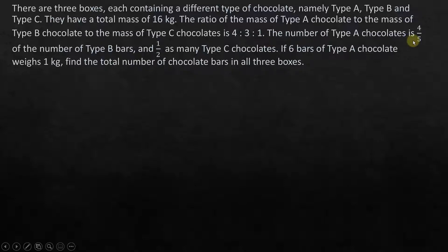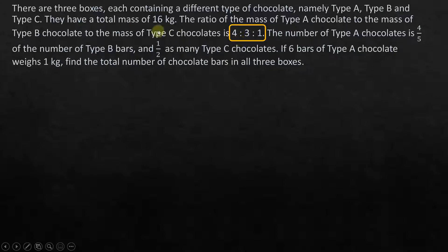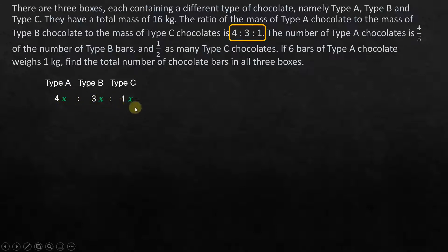The number of type A chocolate is four-fifths of the number of type B chocolate bars, and half as many type C chocolate bars. If six bars of type A chocolate weighs 1 kg, find the total number of chocolate bars. We start with the mass ratio. Type A, type B, type C are in ratio 4:3:1. In ratio form, we write 4x : 3x : x, where x is the common factor. They have a total mass of 16 kilograms, so 4x + 3x + x = 16.